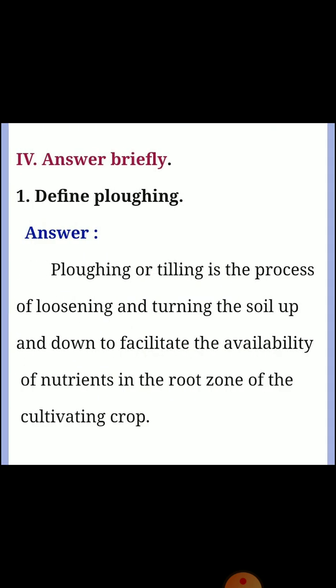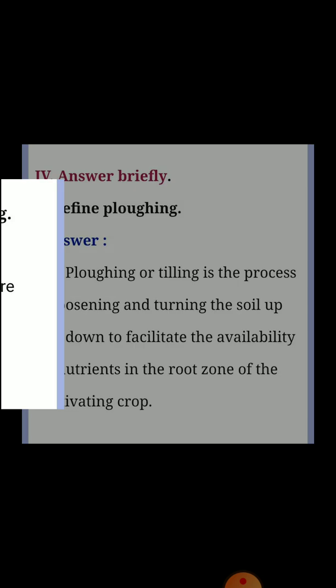Fourth section: Answer briefly. First question: Define Plowing. Answer: Plowing or tilling is the process of loosening and turning the soil up and down to facilitate the availability of nutrients in the root zone of the cultivating crop.